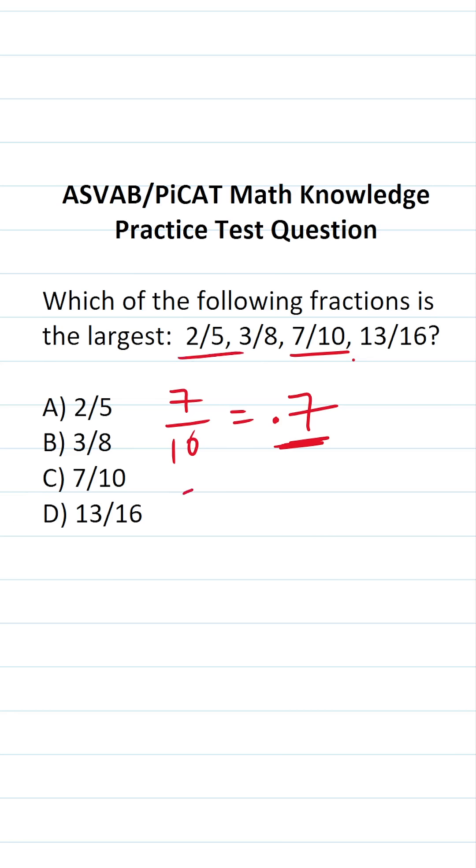Let's move on to 2/5. Can I quickly write that as a decimal? If I multiply 5 by 2 and 2 by 2, this becomes 4/10, which is 0.4. Clearly, 0.7 is bigger than 0.4, so we know 2/5 is not correct.